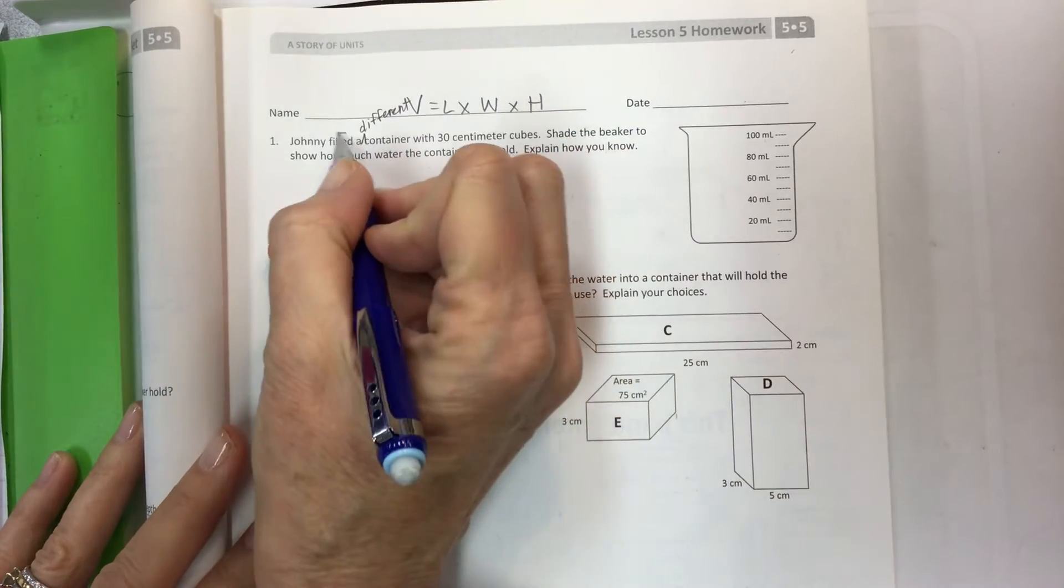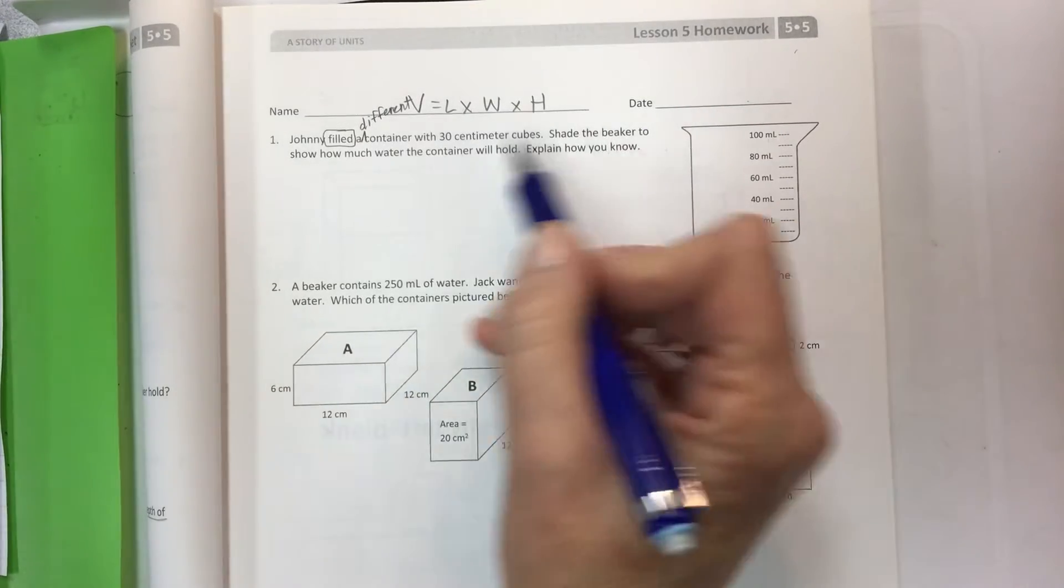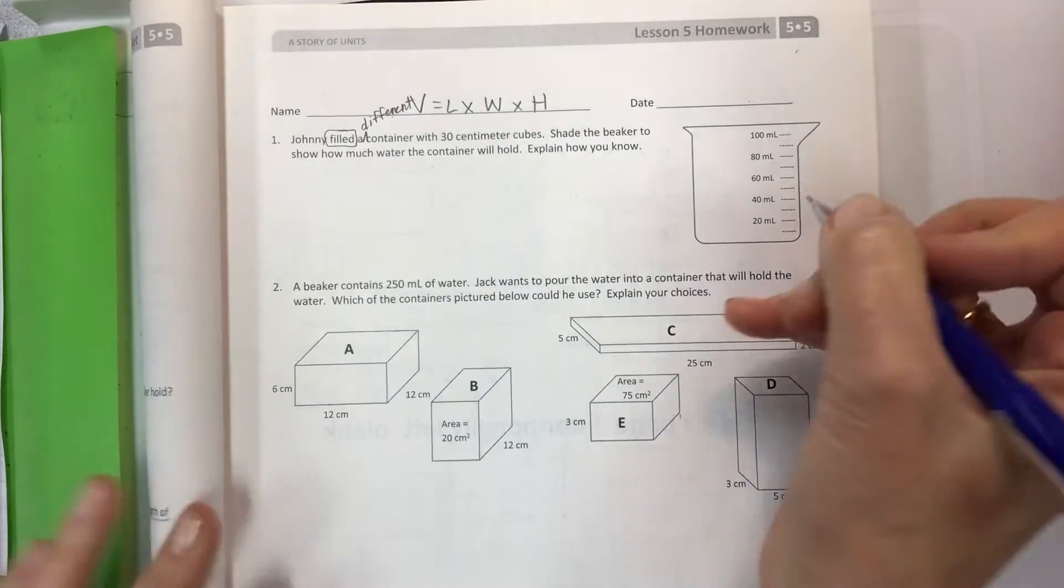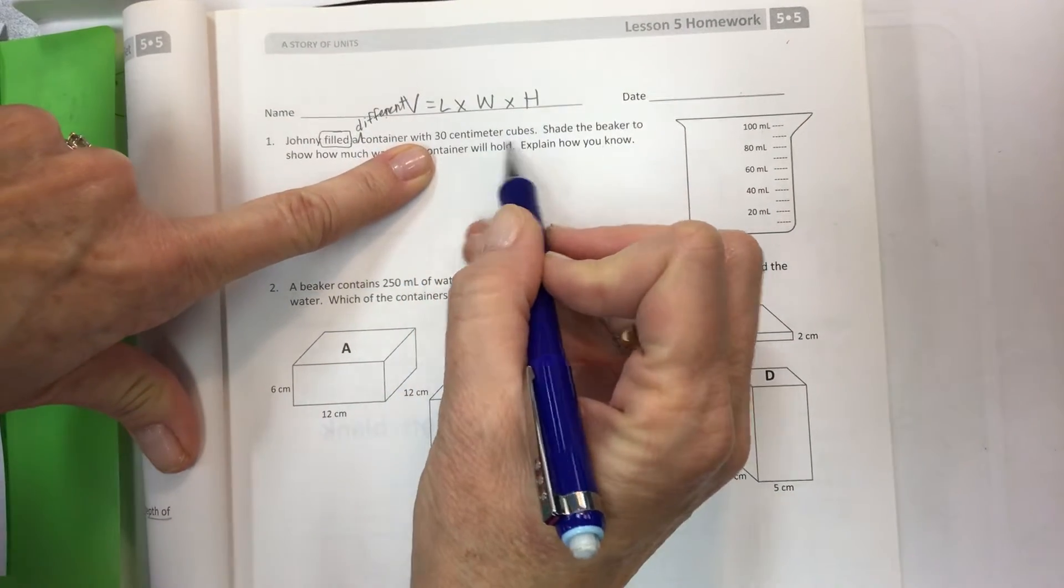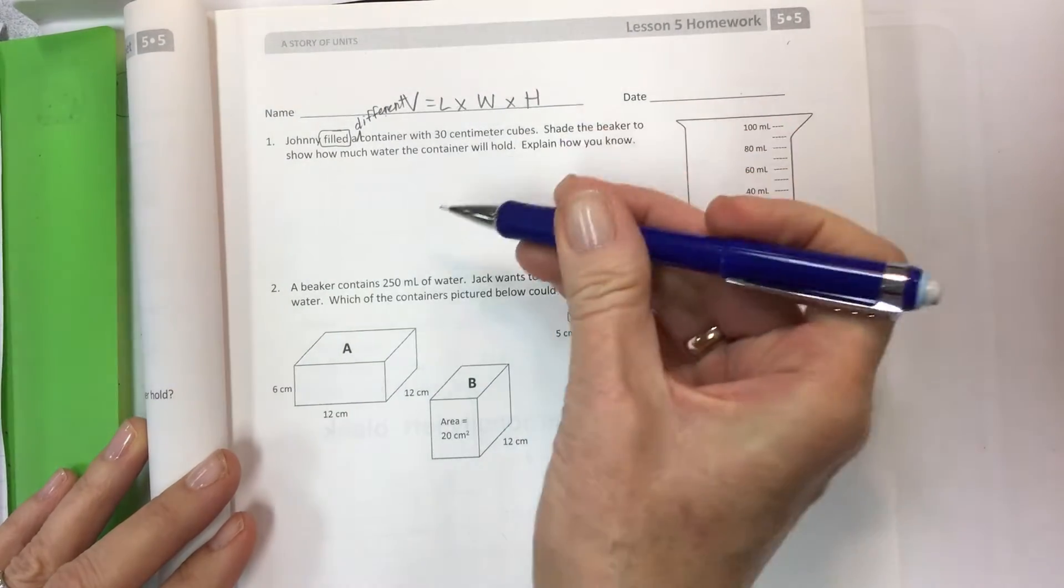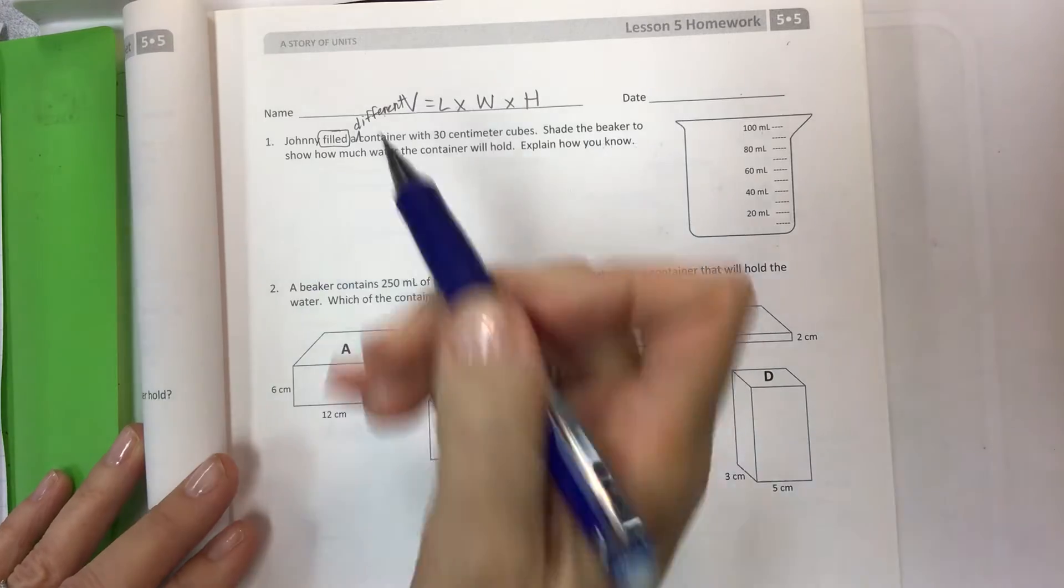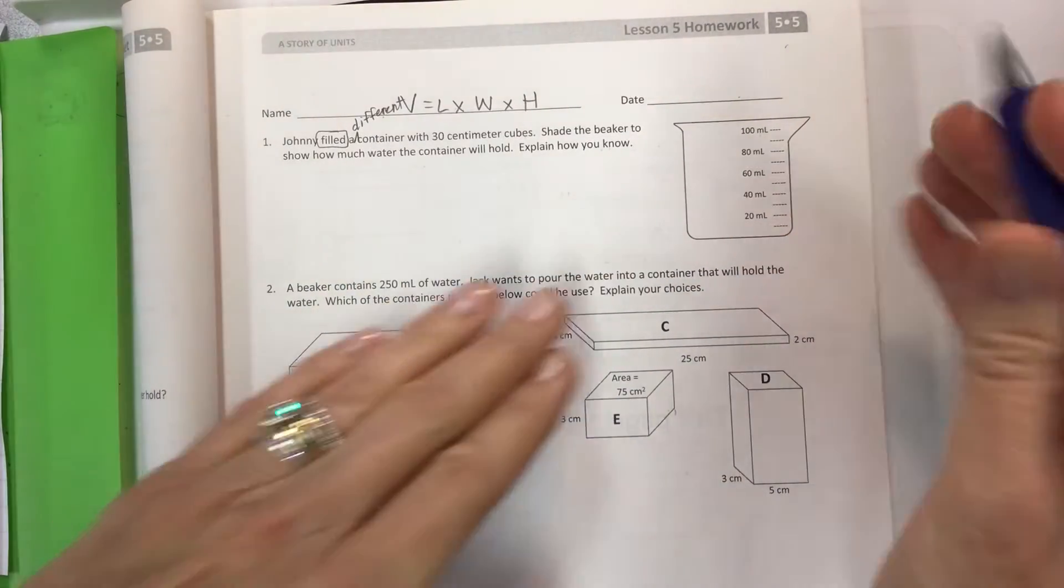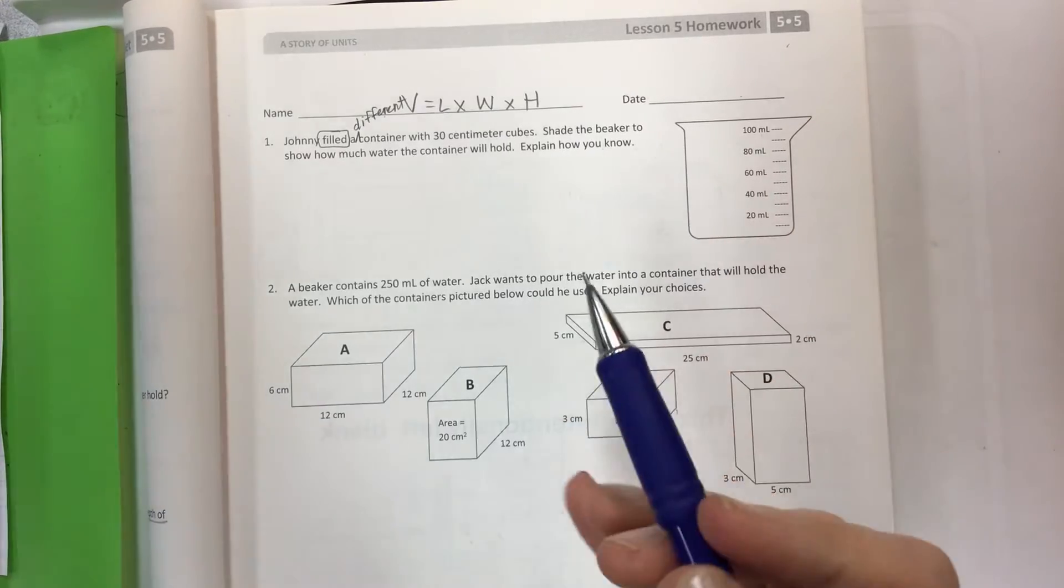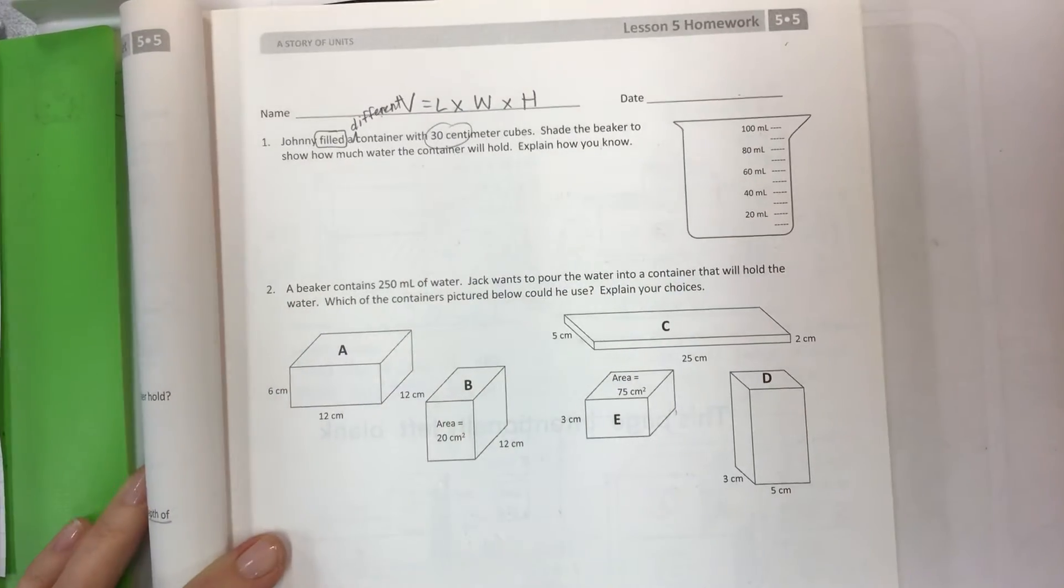Johnny filled another container with 30 centimeter cubes. Now what that means is he filled it - he didn't just put 30 centimeter cubes into this one. Shade the beaker to show how much water the container will hold - the other container not this one. For years and years we would understand the concept that the 30 centimeter cubes would take up 30 milliliters and then we would fill it with water to 70 so that the 70 plus the 30 would make the 100.